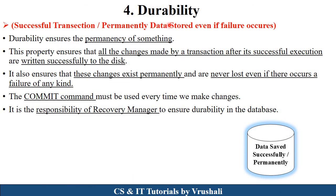The last property is Durability. Durability simply means that for a successful transaction, data is permanently stored even if a failure occurs. Durability means permanency. When you perform a transaction and reach the commit state, your data is successfully and permanently stored in the database. After storing the data, if some errors occur, those errors do not affect the database, because the commit was already performed and data is already stored permanently. This is the responsibility of the Recovery Manager, who handles durability in the database.